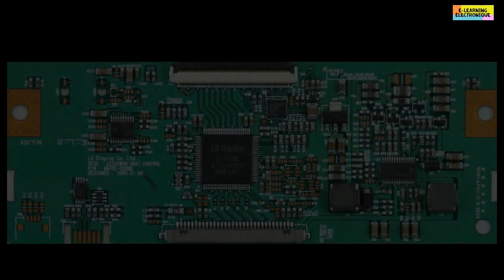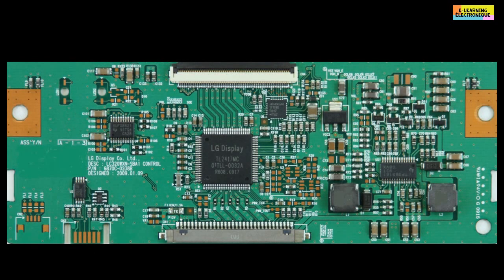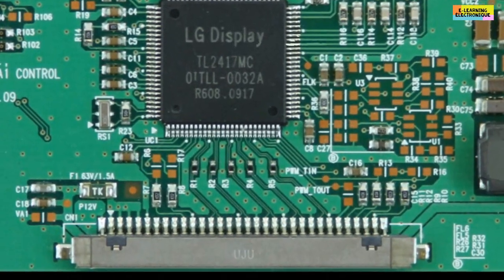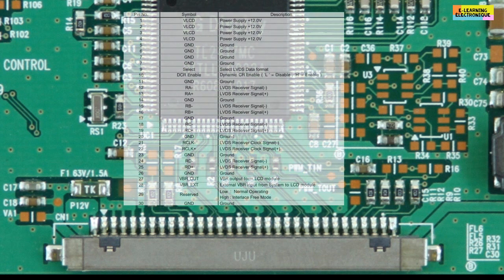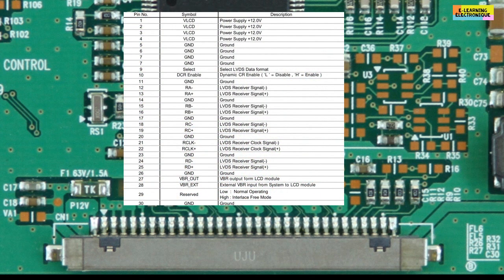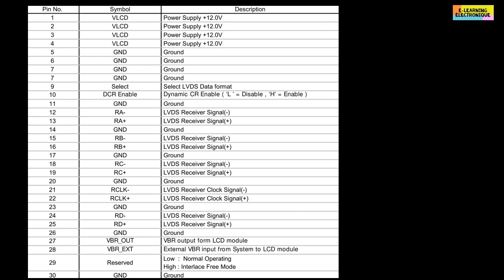The second way is to intervene directly on the hardware and in particular on the TCON board. This can be necessary for example if the LCD screen has been changed by another model. To make this modification, the role of each pin of the connector must be determined using the technical documentation. So how to read this documentation?